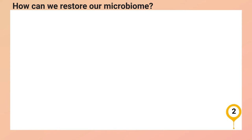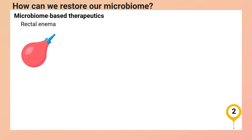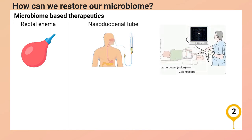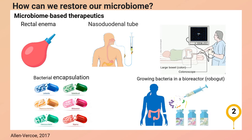How can we restore our healthy bacteria when such issues occur? An important potential approach for bacterial restoration is the manipulation of gut bacteria, where a broad spectrum of symbiotic bacteria obtained from a healthy individual's fecal matter is transplanted into the gut of a patient. This is called fecal microbial transplantation, and it has been shown to be useful as a therapy for enhancing or modulating gut microbiome diversity. There are several delivery methods: rectal enema, nasoduodenal tube, colonoscopy, bacterial encapsulation, or growing useful bacteria in a bioreactor and then transferring them to the patient.